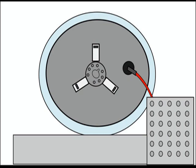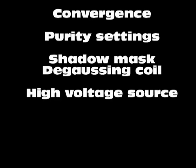Other circuitry required by the picture tube includes the static and dynamic convergence devices, the color purity settings, the shadow mask degaussing coil, as well as a high voltage source for accelerating and focusing the electrons.